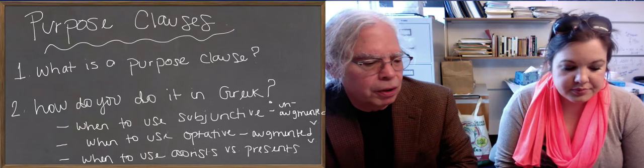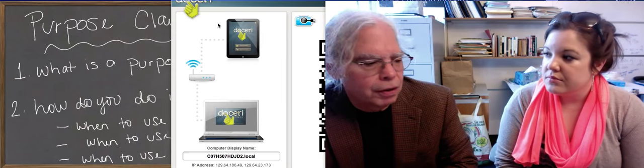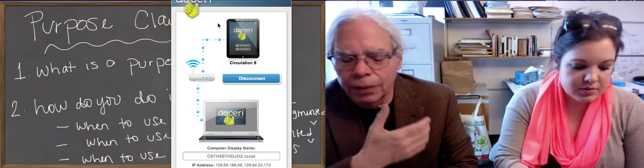If it's a future verb, and then you add a purpose clause to it, then you're going to use a subjunctive. Whereas if it's an aorist, an imperfect, or a pluperfect, you're going to use the optative.